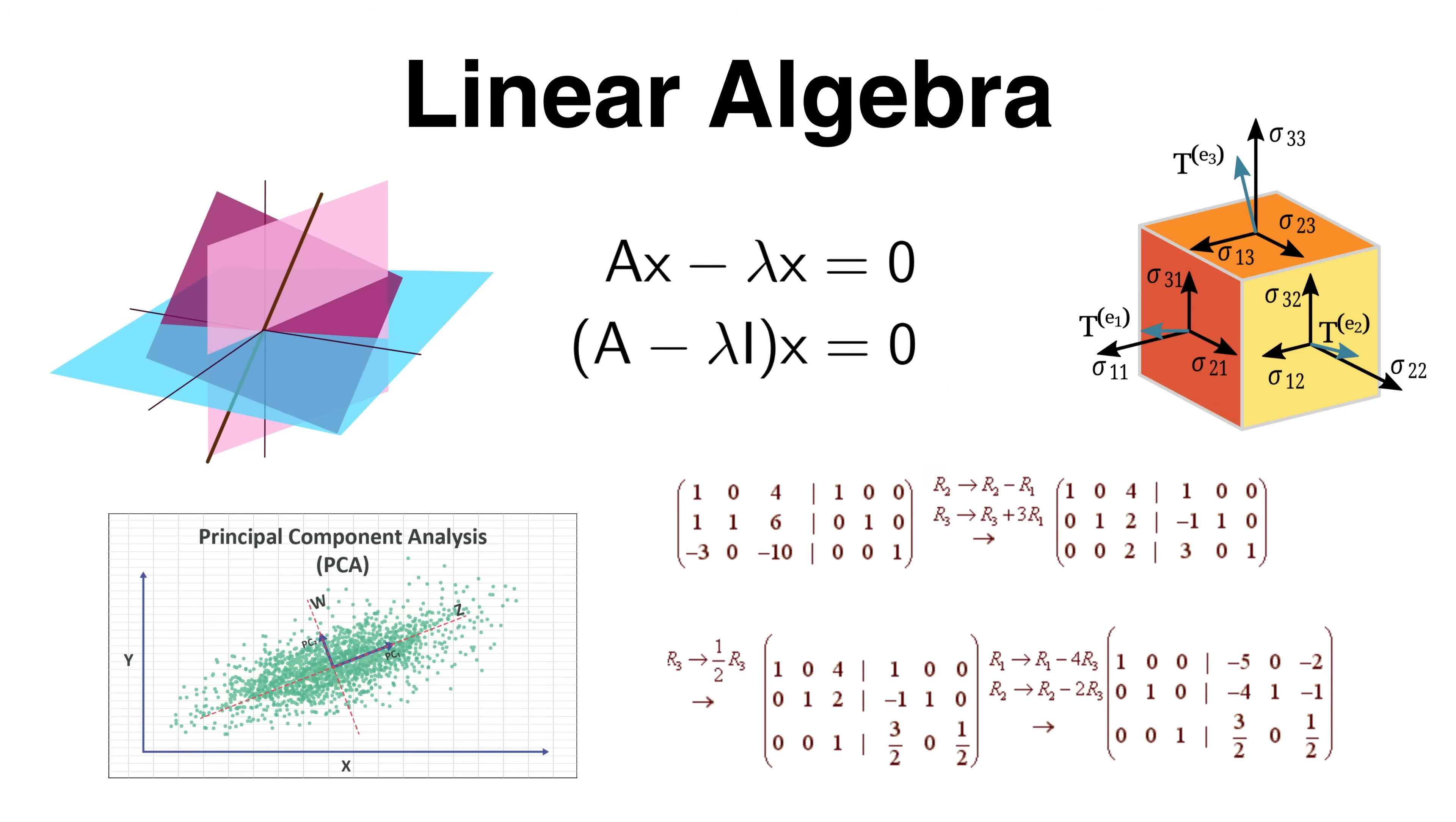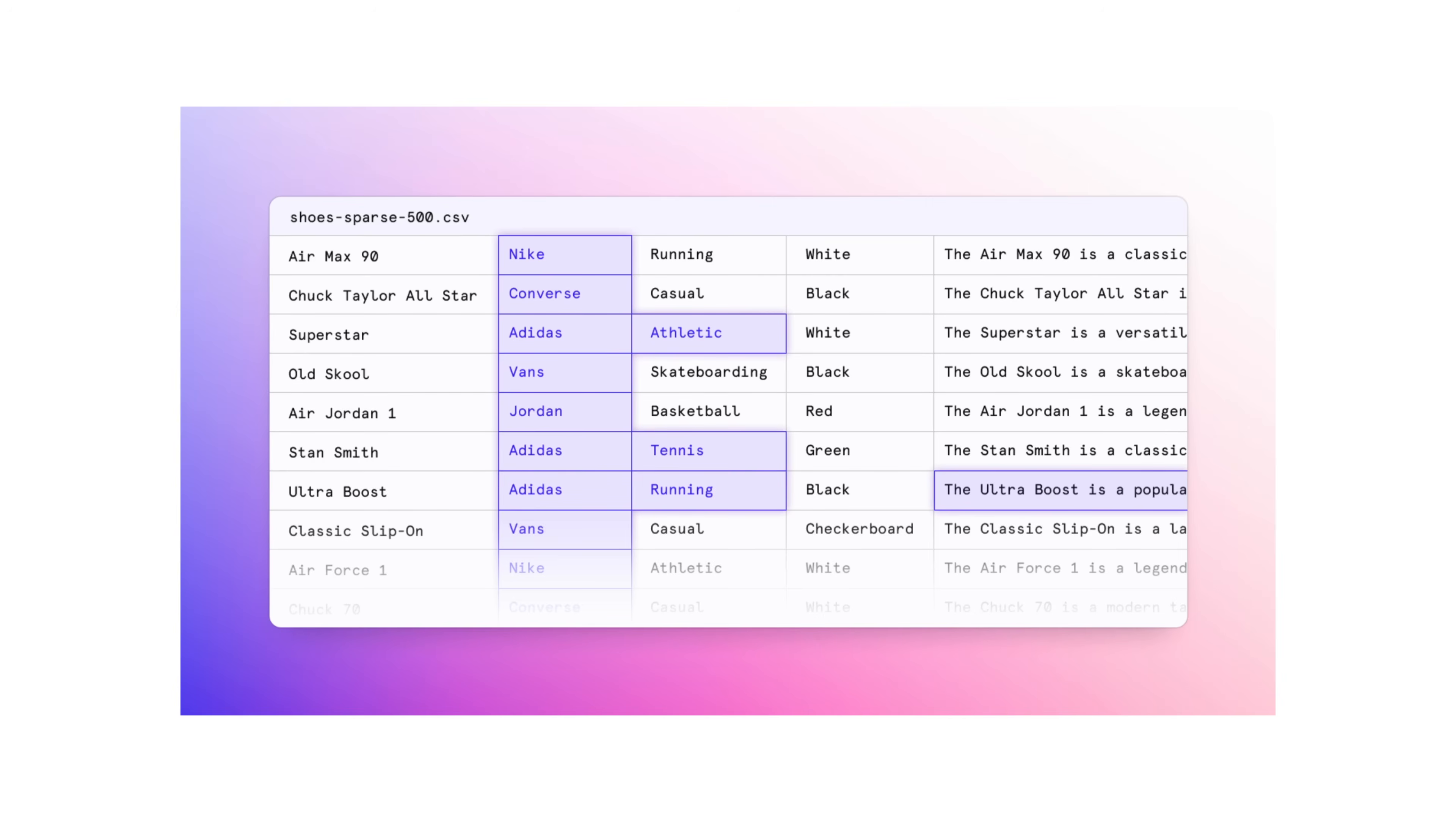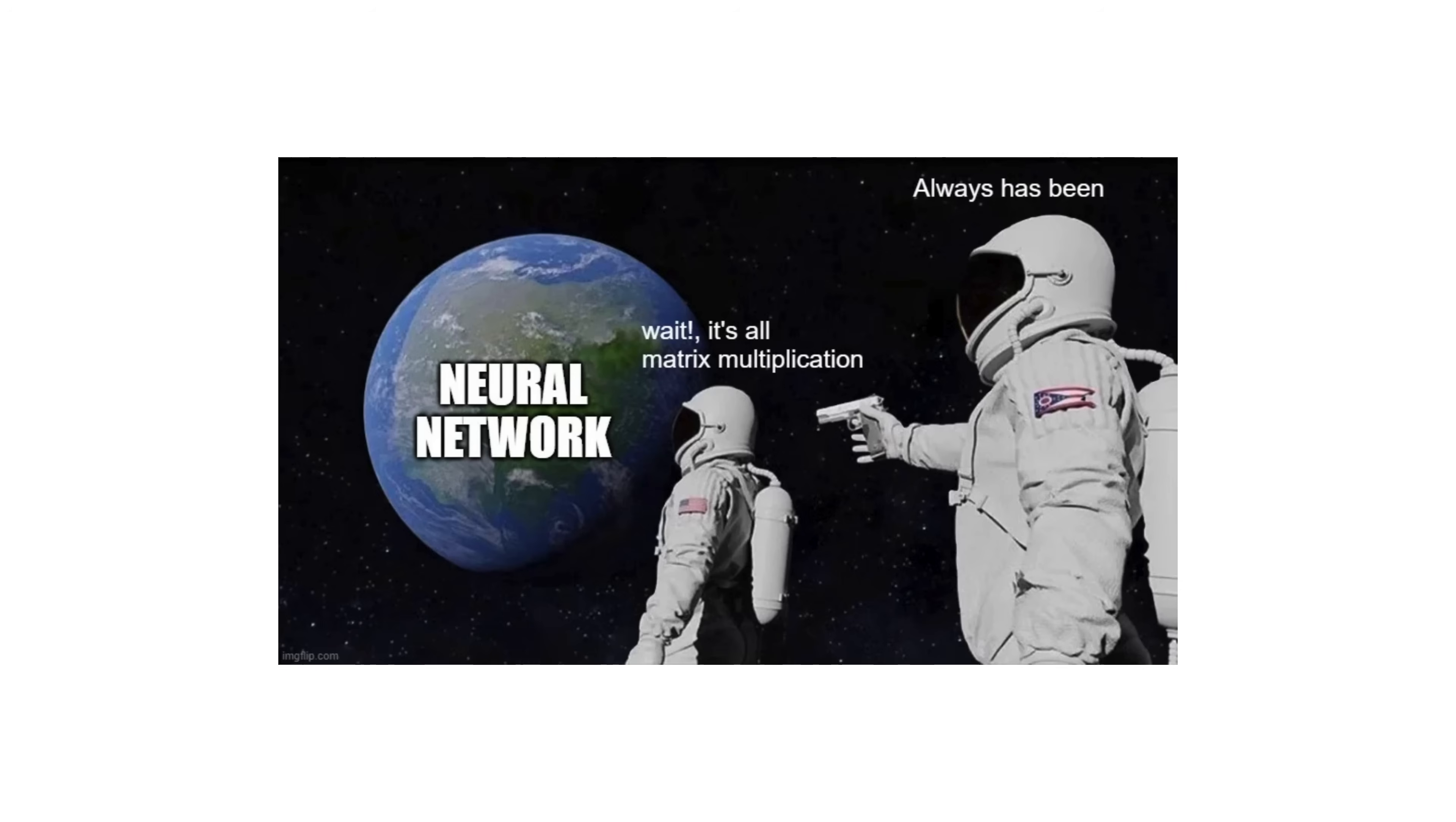Next is linear algebra. This is the language of data in machine learning. Whether you're working with images, text or tabular data, it can all be represented as vectors and matrices. Understanding how to work with these structures is key, especially as you get into deep learning.